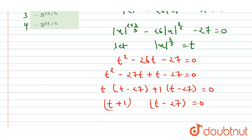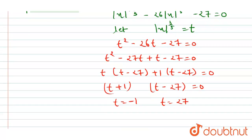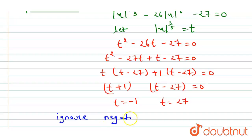Factorizing gives us (t + 1)(t - 27) = 0, so t = -1 or t = 27. We ignore the negative value t = -1 since t = |x|^(3/5) cannot be negative, so t = 27.